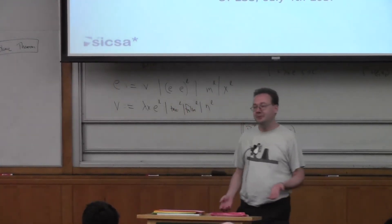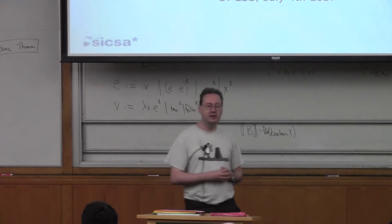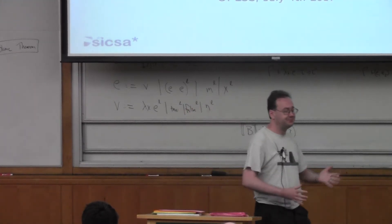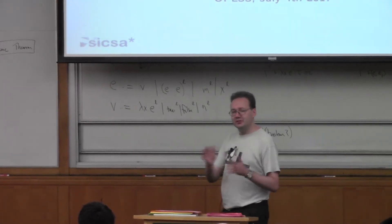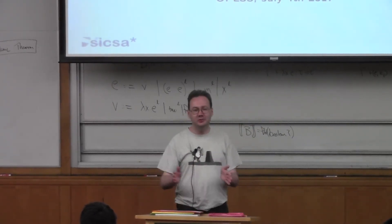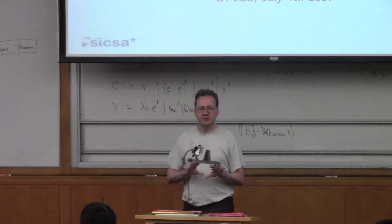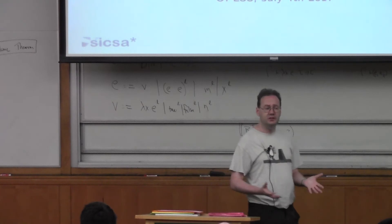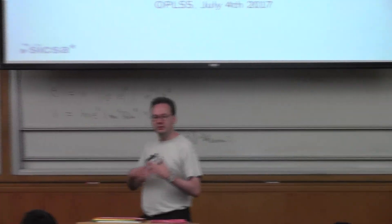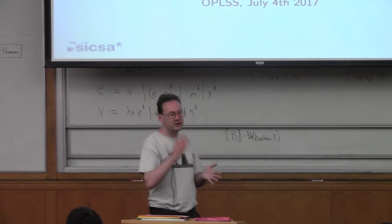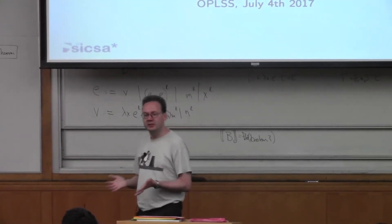Yesterday we talked about modeling state traffic in types, and we hit the point where we model the state of a door — opening the door means it's open, you can open the door when it's closed. I left you with a larger example of a bank's ATM, showing how you can do operations on the ATM and make sure you only do them when the system is in the right state.